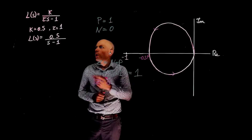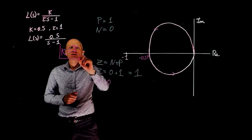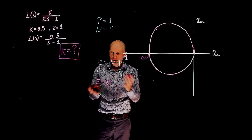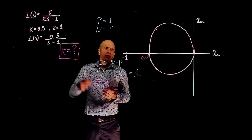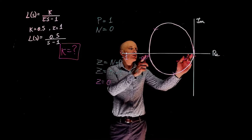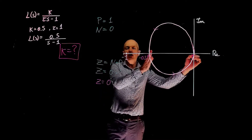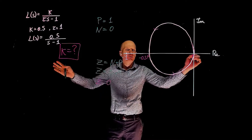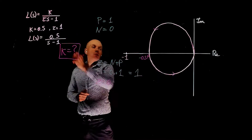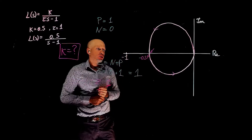The question is: what is the value of k that will make this system closed-loop stable? Notice that if we increase k, the Nyquist plot will expand to the left. When k equals 0.5, the Nyquist plot crosses the real axis at negative 0.5.